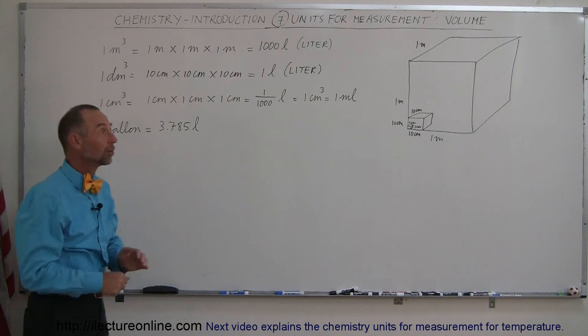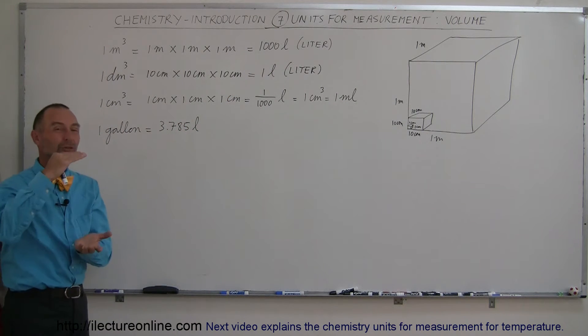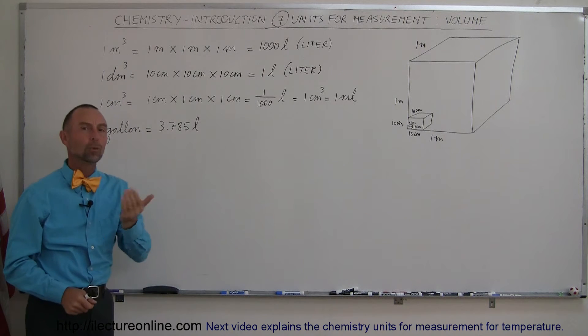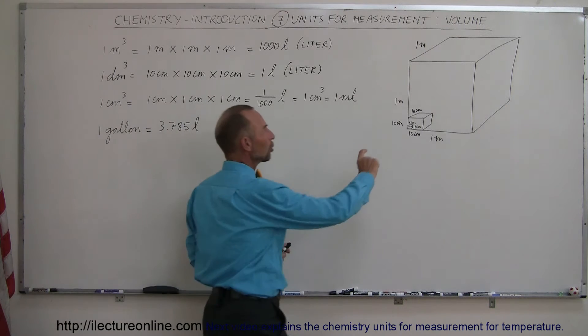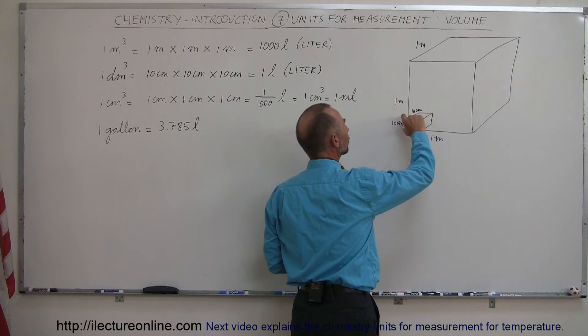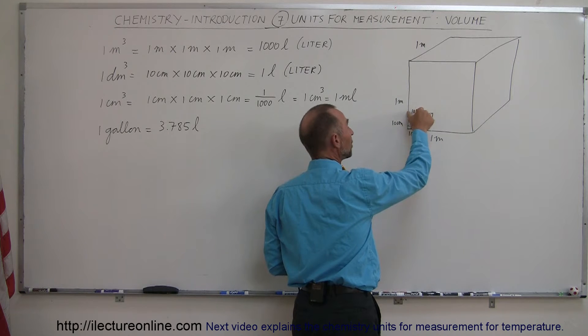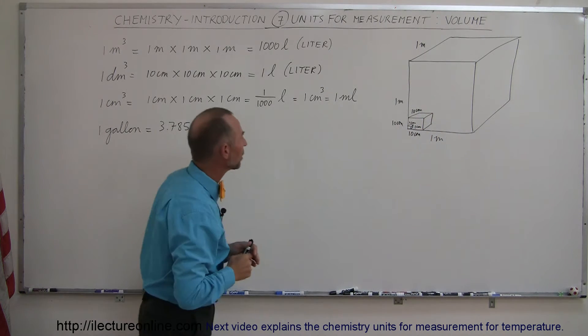Now, we don't deal much with cubic meters in chemistry. We tend to deal with smaller volumes. So we have what we call a decimeter. Decimeter is one-tenth. So we take a cube that has size equal to 10 centimeters, which is one-tenth of a meter, so 10 centimeters by 10 centimeters by 10 centimeters. Now we have a cubic decimeter.